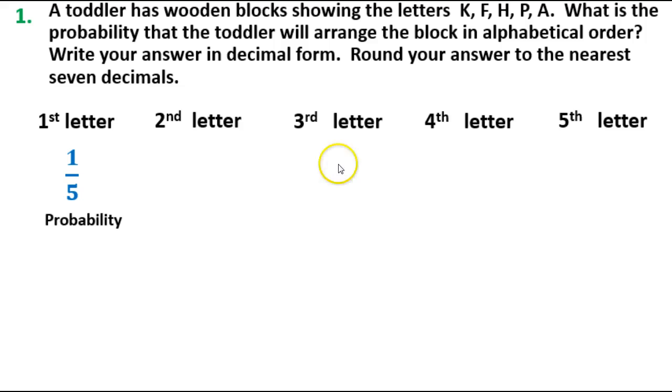Now, if we select that one, the second letter - what's the probability the toddler will select it? Well, the A is already gone, assuming they did the first one correctly. We only have four letters left. We need the probability that the next one will be in alphabetical order. In alphabetical order, F would be next. So the probability they'll choose F from these four is 1 over 4.